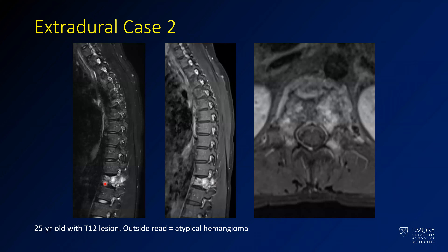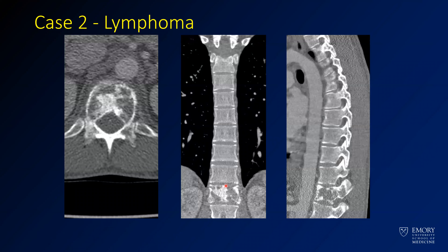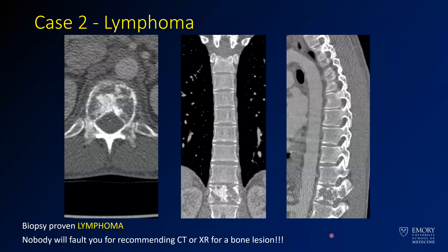Here we see a primary bone lesion in the T12 vertebral body. It's bright on T2, enhancing on post-contrast fat-sat, and avidly enhancing on axial post-contrast. This got called an atypical hemangioma, but on CT, it doesn't look typical for a hemangioma at all — it looks very aggressive, with some pathologic fracture and involvement of the pedicle. The patient had a progressively worsening lesion that ultimately had to be biopsied, and it was B-cell lymphoma arising in the bone. If you recommend a CT or X-ray for any suspicious lesion like this, I'm pretty sure most people on CT would not call this a hemangioma.